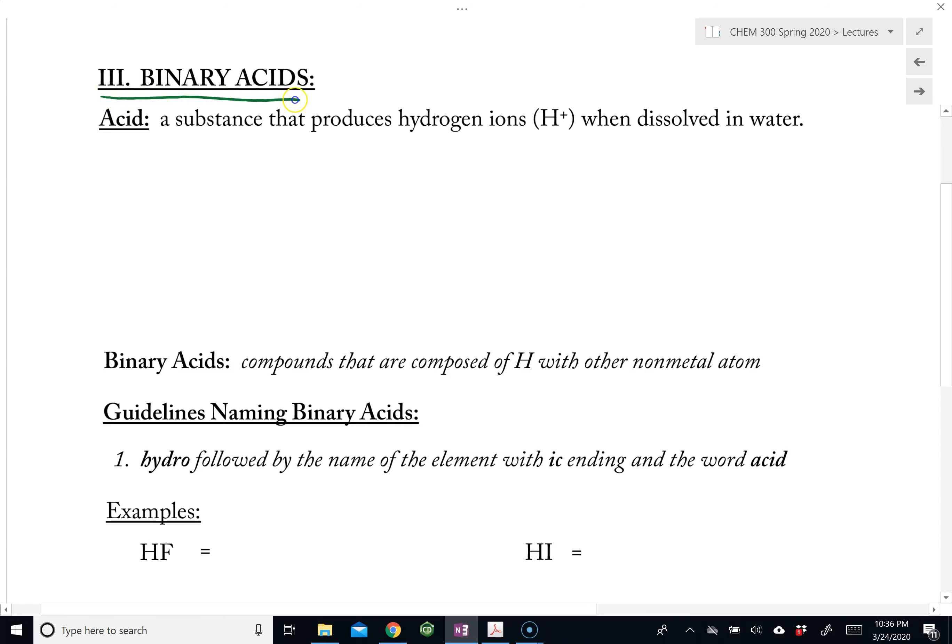So first, what are binary acids? Binary acids are substances that consist of hydrogen with another non-metal. The term binary refers to two, so there are two atoms: one is hydrogen, and the other is a non-metal. That's what a binary acid is.